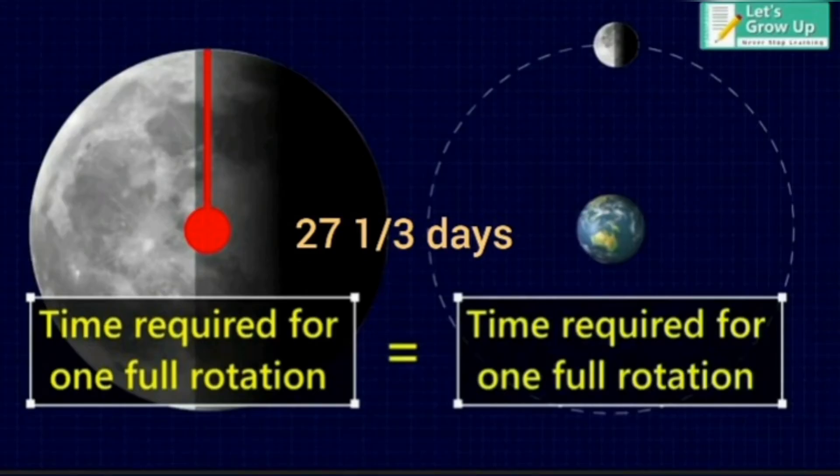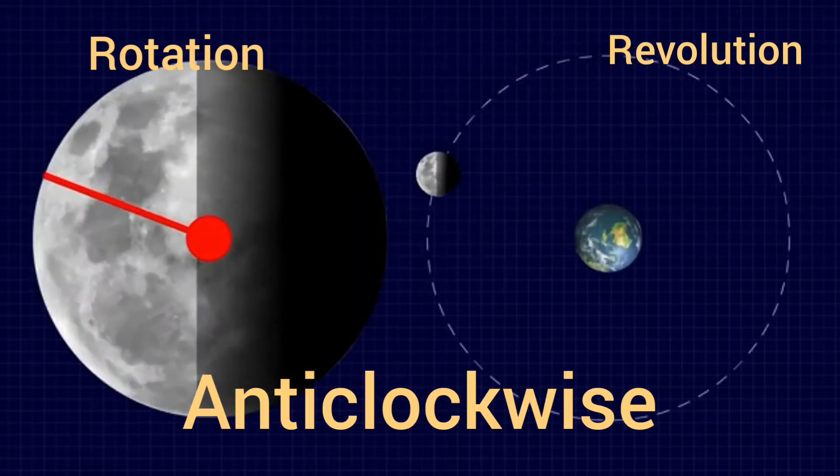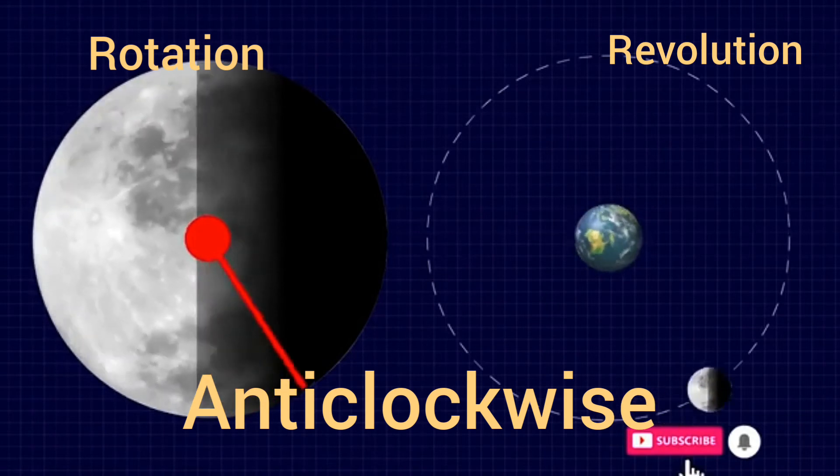That is why the surface of the moon facing the earth is always the same. The direction of rotation and revolution of the moon is also the same. That is anti-clockwise.